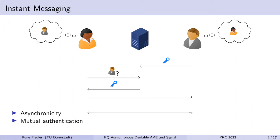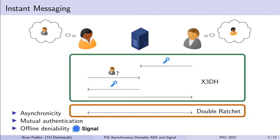Another feature that we want is mutual authentication — each party should be sure that they are actually talking to the party they think they are talking to. The third feature that Signal is looking for is called offline deniability. Intuitively, this means that if you have a transcript of a conversation, you can deny that you were involved in creating this transcript. We will go into the details of this more later on.